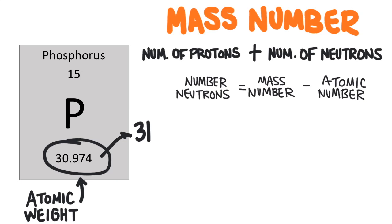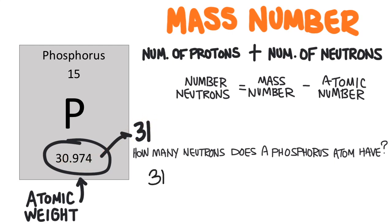For example, we could ask how many neutrons does a phosphorus atom have? Well, round this number to 31, that's the mass number of the most common type of phosphorus, subtract the atomic number of 15 and we get 16. So phosphorus has 16 neutrons.